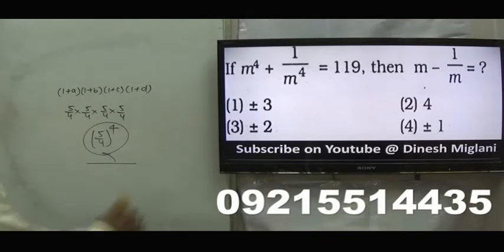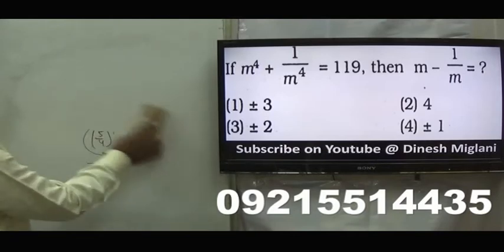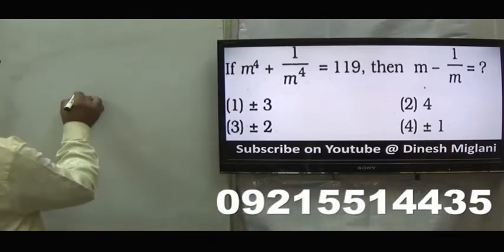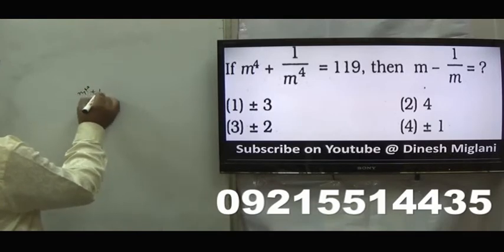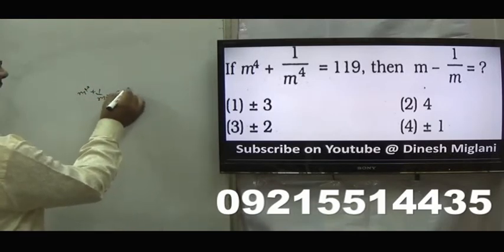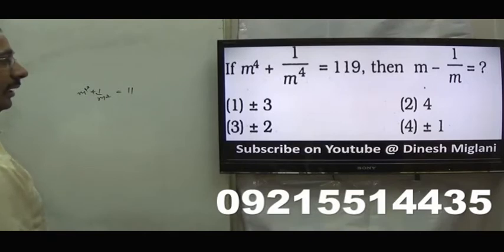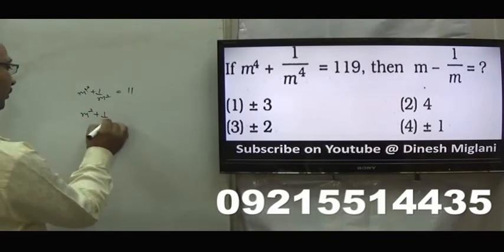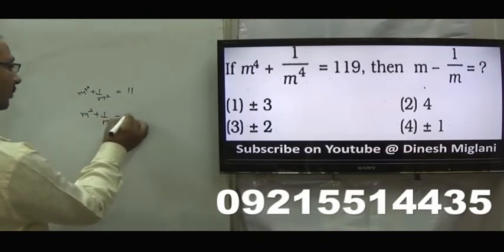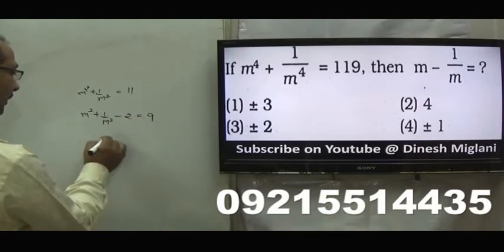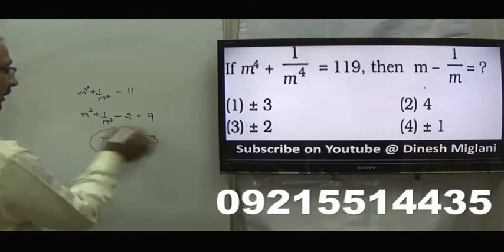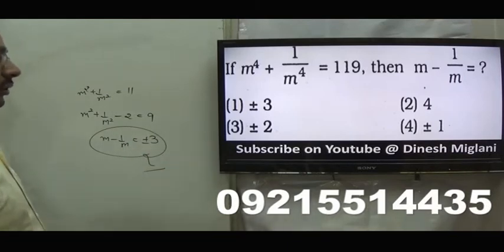m raised to the power 4 plus 1 by m raised to the power 4 equal to 119. I have to find m minus 1 by m. Adding to both sides: m square plus 1 by m square equal to 11. Subtracting 2: m square plus 1 by m square minus 2 equal to 9. So m minus 1 by m equal to plus minus 3. Answer is first one, plus minus 3.